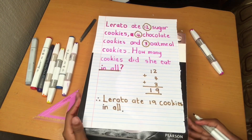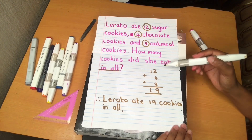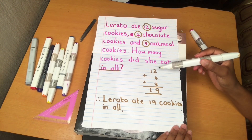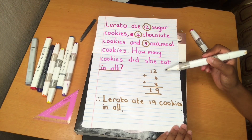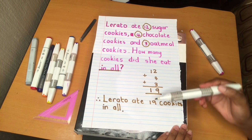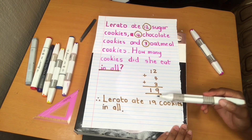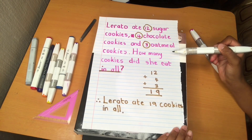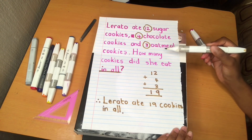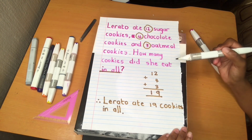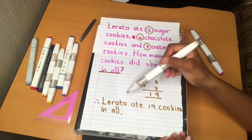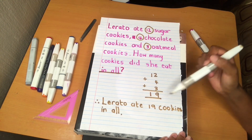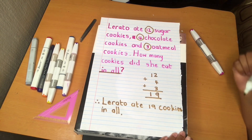We have our sum showing our working out, and then we have our sentence which answers the word problem: 'How many cookies did she eat in all?' Lorado ate 19 cookies in all.